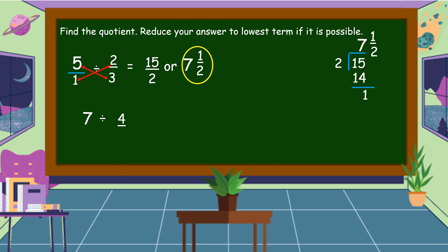Another example. Seven divided by four-ninths. So, ganun pa rin ang gagawin natin. Lalagyan natin ng denominator na one ang ating whole number. So, seven over one divided by four-ninths. Then, cross multiply. Seven times nine is equal to sixty-three. One times four is equal to four. Sixty-three over four is an improper fraction. So, we're going to divide sixty-three by four.